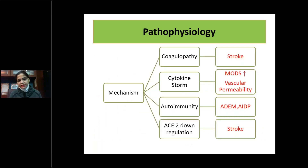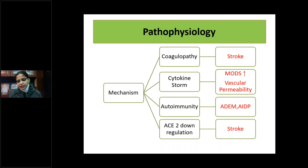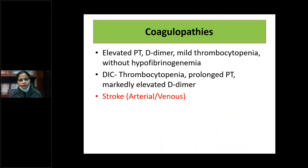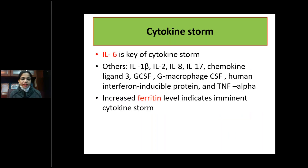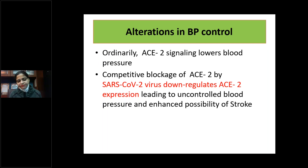Coagulopathy can lead to stroke. Cytokine storm causes multiple organ involvement including the nervous system through increased vascular permeability. Autoimmunity, via molecular mimicry between viral components and nervous system structures, can lead to ADEM (acute disseminated encephalomyelitis) and GBS-like presentations. ACE2 downregulation can further increase stroke incidence. Cytokine storm markers include ferritin — elevated ferritin may indicate imminent storm and greater risk of complications.